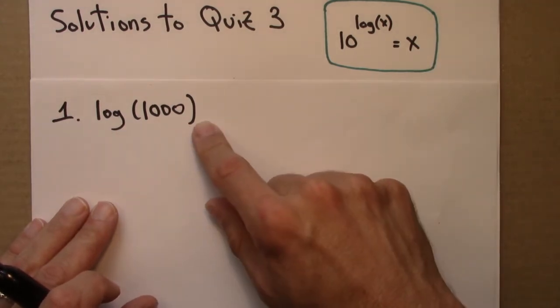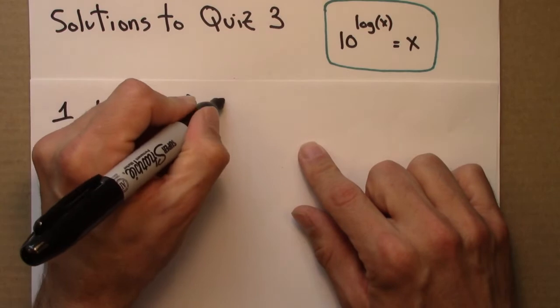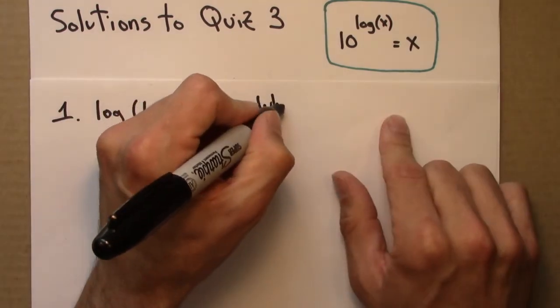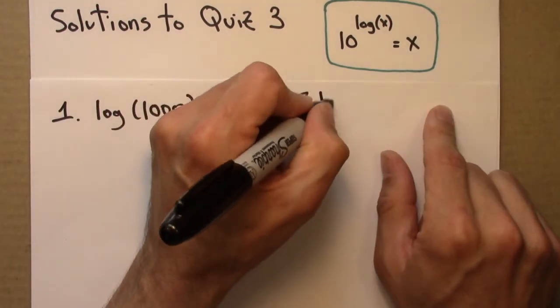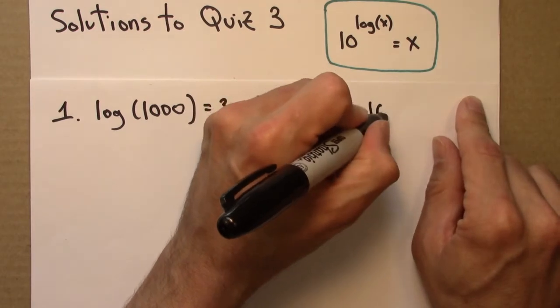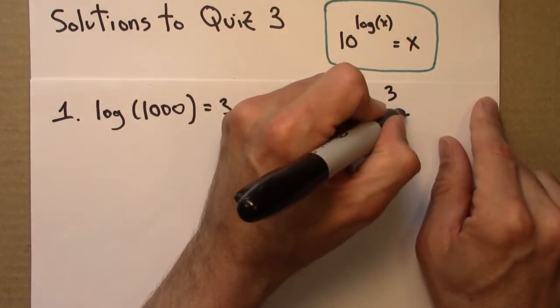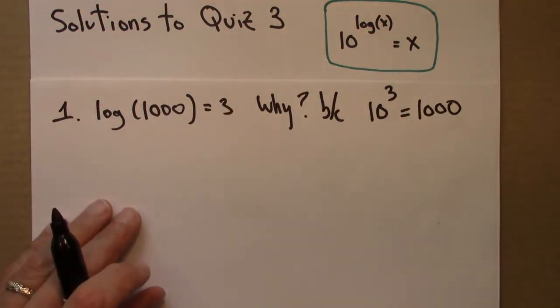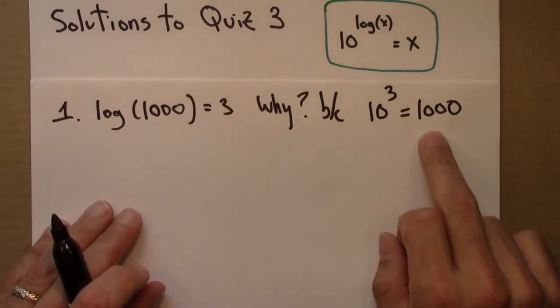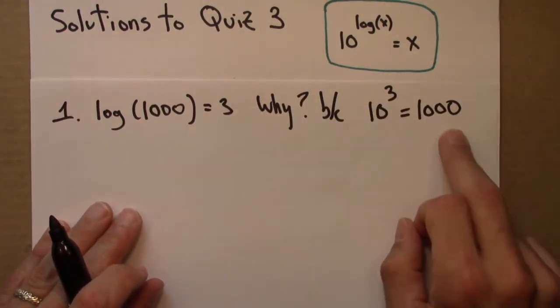So log of 1000, what would that be? I claim it's 3. Why? Because 10 to the 3 equals 1000. So the log of 1000, that's the exponent I'll need to get 1000 back.